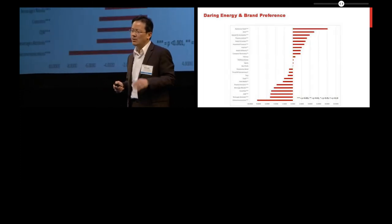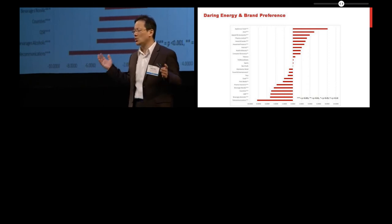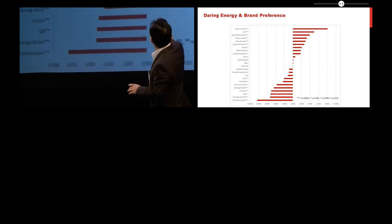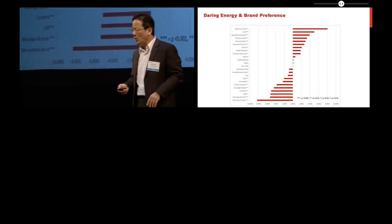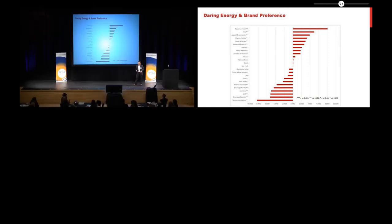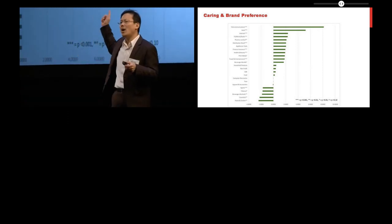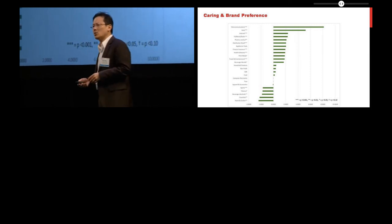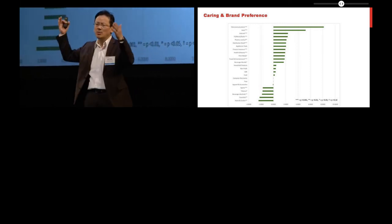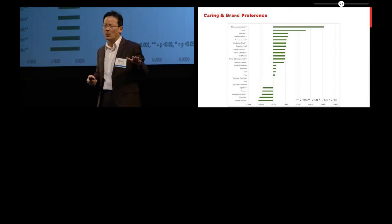All right, and so I keep going here. Daring energy, again, you see much more selective in terms of which industry would benefit from brand character. A few industries on the right benefit, quite a few industries on the left lose from brand character in terms of daring energy. And caring, by and large, does very well. It is one of the dimensions that seems to be helping brands a lot across a wide range of industries.